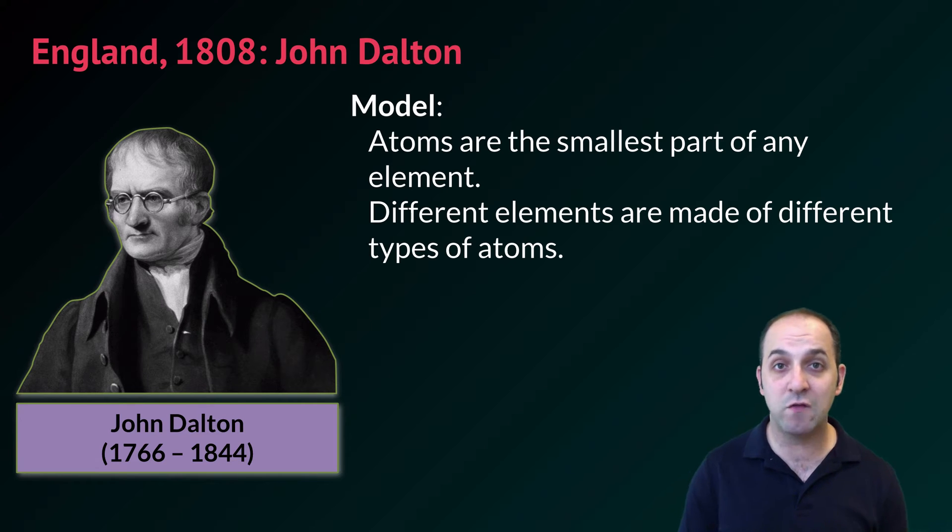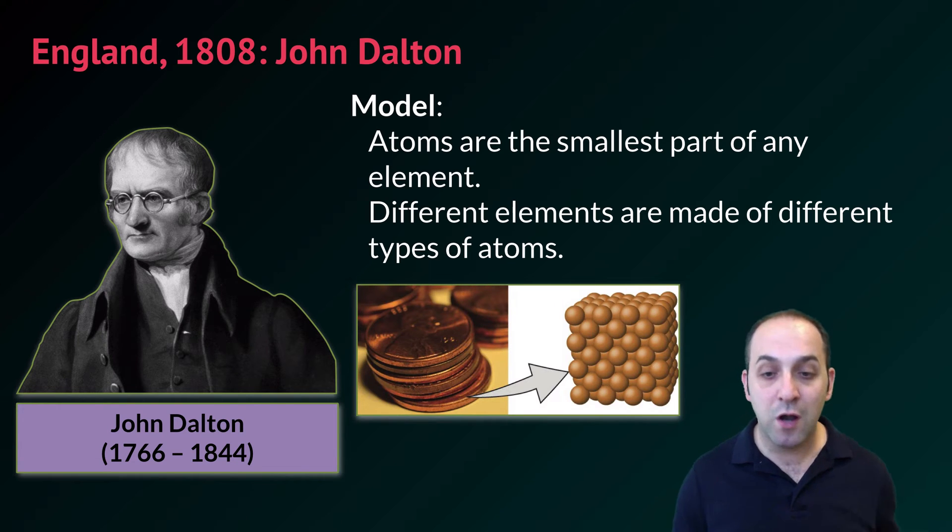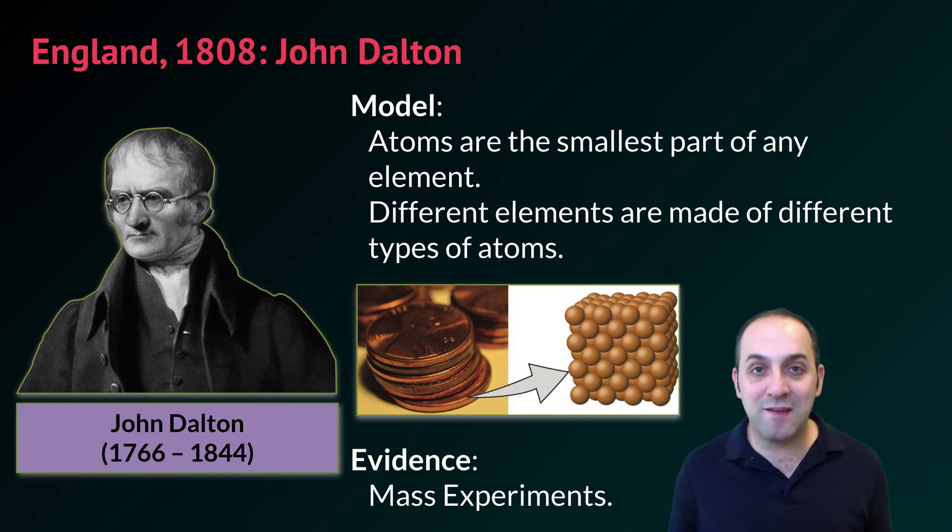It wasn't really until we get to England in the beginning of the 1800s that we're talking about evidence that actually supports the notion that there are in fact atoms. John Dalton is the one who usually gets credit for this model of the atom, though we should recognize it's the work of many different scientists. The Dalton model states that atoms are the smallest part of any substance, but that different elements are made out of different types of atoms. This is a representation of what this might look like - copper atoms making up a copper penny, all being represented as spheres of the same color and dimensions.